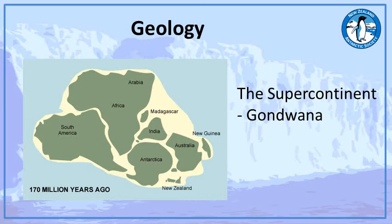Looking at geology: 170 to 180 million years ago Antarctica was part of a supercontinent called Gondwana, when the Earth's continental crust formed one large continent. Since then, this continental crust has fragmented, forming tectonic plates that have drifted apart across the surface of the Earth. You can see there Antarctica and New Zealand, Australia, South America and so forth.